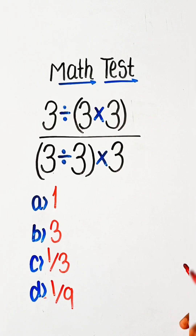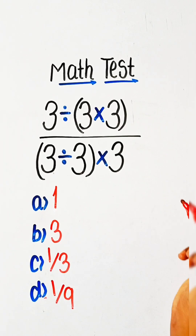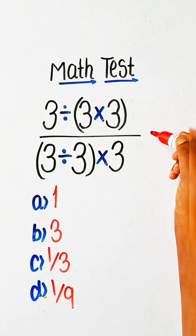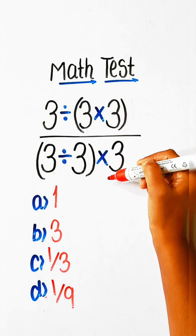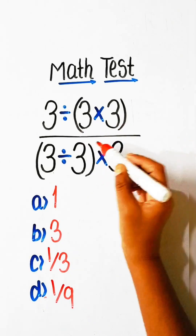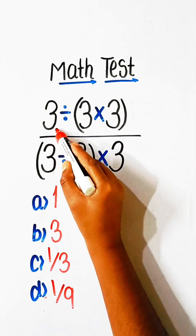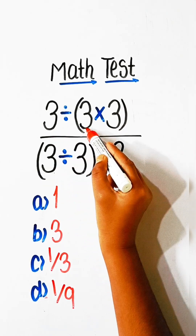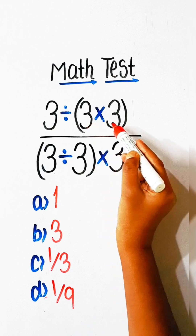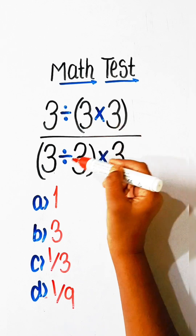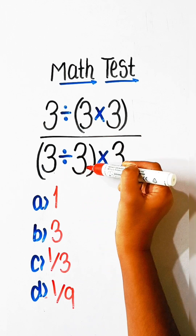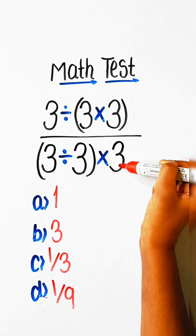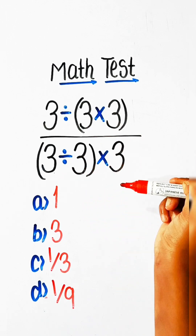Hello friends, in this video we will try to solve this math expression: 3 divided by 3 multiplied by 3, upon 3 divided by 3 multiplied by 3, equals to what?